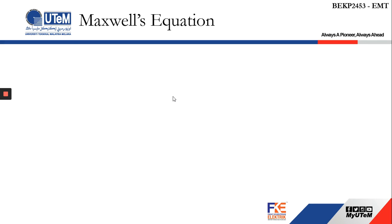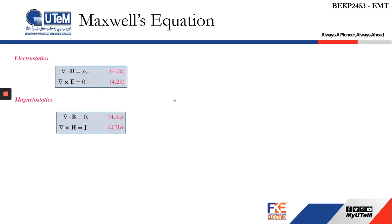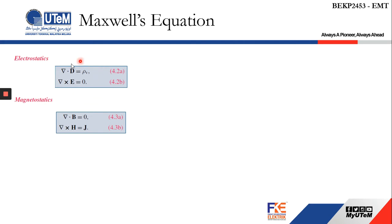When we go back to Maxwell's equations under static conditions, we have already derived these four equations: number one, ∇·D = ρv; number two, ∇×E = 0; number three, ∇·B = 0; and number four, ∇×H = J. These four conditions are under static conditions where the electric field and magnetic field are isolated from each other — they are independent. When we consider time-varying fields, the electric and magnetic fields interact, and the equations change.